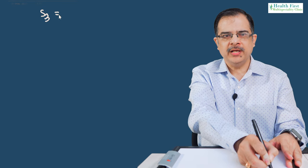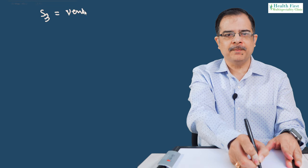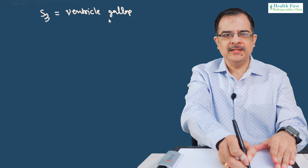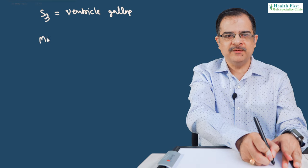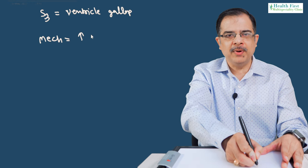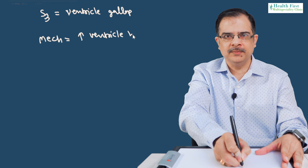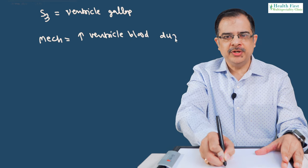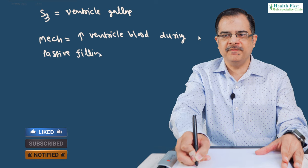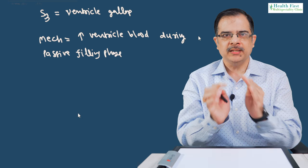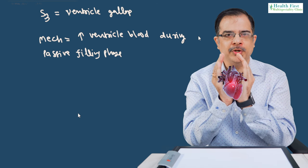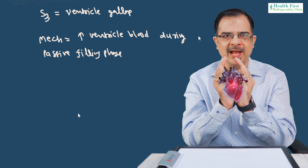S3 sound is also known as ventricular gallop. The mechanism for this sound is an increase in ventricular blood. This increased ventricular blood occurs during the passive filling phase of the ventricles. The ventricle will contain more blood during this phase and it will vibrate due to increased blood volume. That vibration is known as the S3 sound.